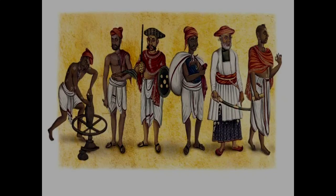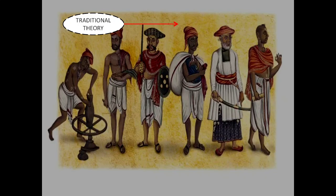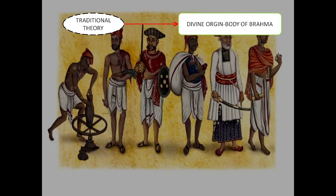In India, the theories of how caste originated are classified into five types. The first is the traditional theory, which says that the caste system originated from divine origin — from the body of Brahma. The head represents Brahmins, the shoulders represent Kshatriyas, and so on.